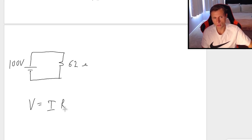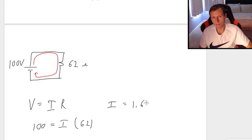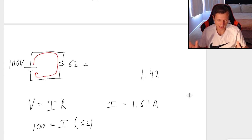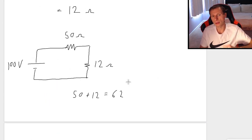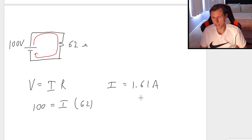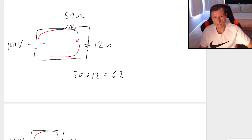From here, we use Ohm's law for the whole circuit with the battery to find the total current. That's 100 equals I times 62 — divide both sides by 62 — and we get a current of 1.61 amps. It looks like initially the current is higher than before, when it was 1.43 amps. But don't be so quick to write that as the answer, because we now have to work backwards to eventually get to the 20 ohm resistor. All of these are still in series, so that's also 1.61 amps for that entire portion of the circuit.